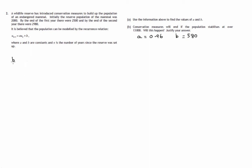So part B, conservation measures will end if the population stabilizes at over 13,000. Will this happen? Justify your answer. So we're concerned now about what on earth happens in the long run. We know that we've got 2,000, we know that we then get 2,500, we know the population's increasing, but basically what's happening in the long run, does it stabilize? Is there a limit?